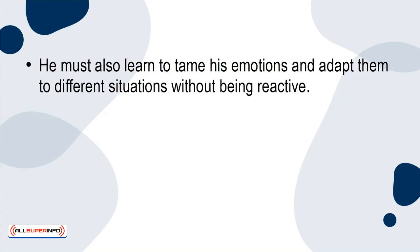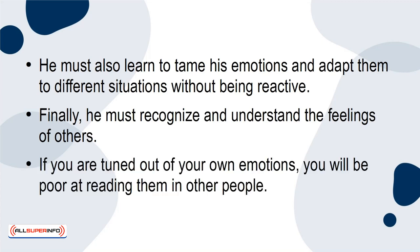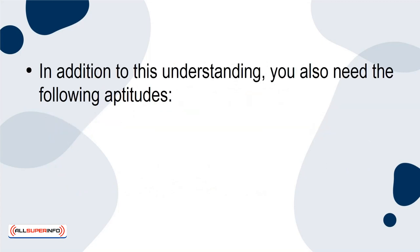He must also learn to tame his emotions and adapt them to different situations without being reactive. Finally, he must recognize and understand the feelings of others. If you are tuned out of your own emotions, you will be poor at reading them in other people. The basis of emotional intelligence is knowing oneself and understanding others better. In addition to this understanding, you also need the following aptitudes.